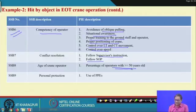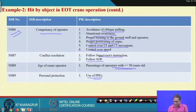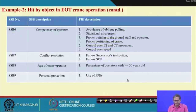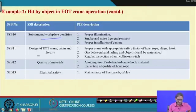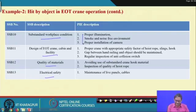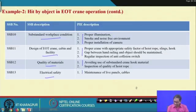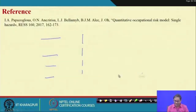Additional PIEs include use of PPEs (personal protective equipment), substandard workplace condition, design of EOT crane, cabin facility, quality of materials, and electrical safety. These are all case-specific. In some other plant or operation you may find more PIEs, but more or less these will be found since the dataset is a good amount of data.